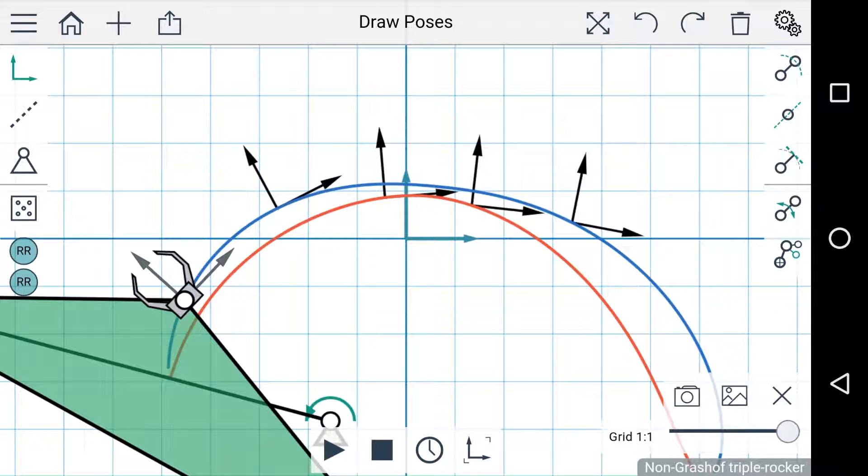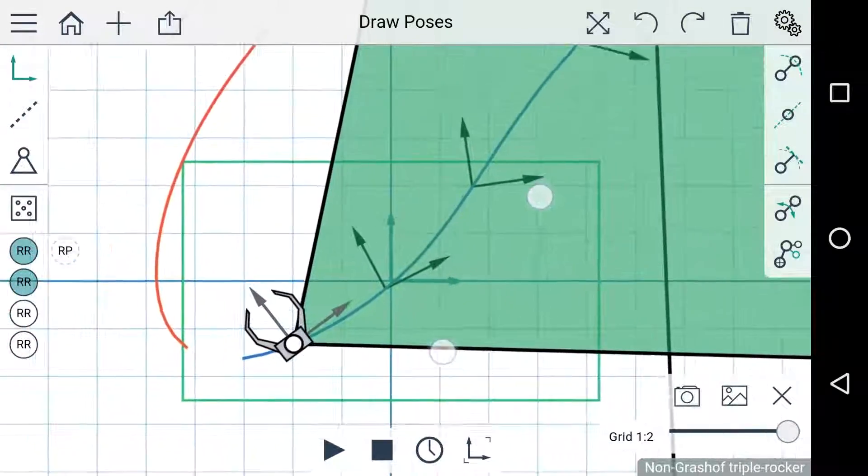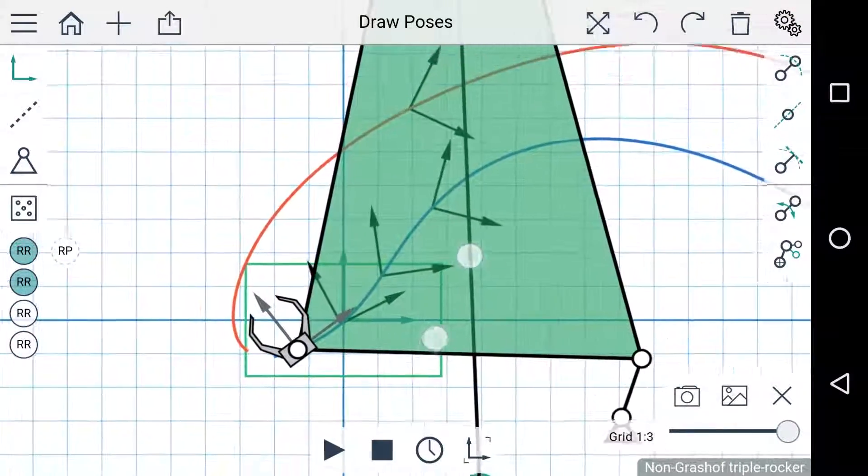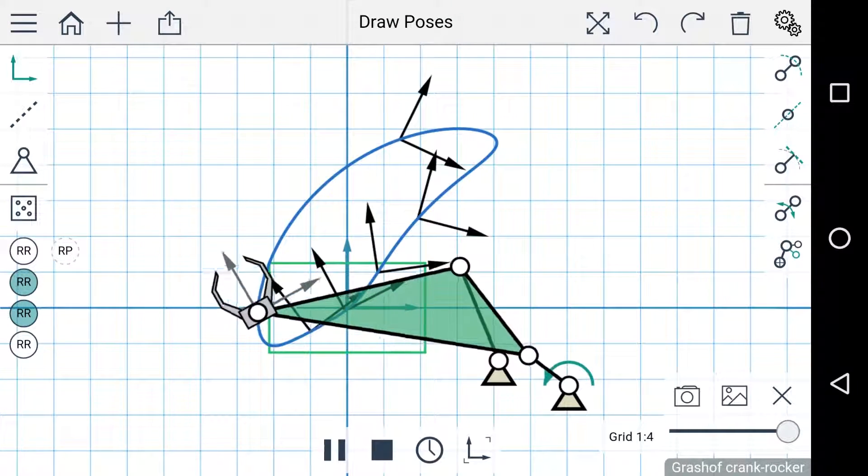Finally there's the sidebar menu here and inside that are a couple examples. There are a few simulation examples here and also a few five position synthesis examples. This example synthesizes a mechanism that follows the motion of a shoulder, so you can see there are a few different options here that fit that motion.